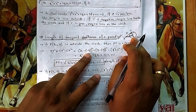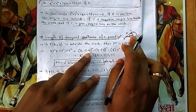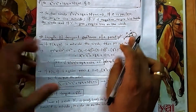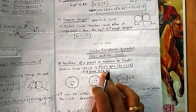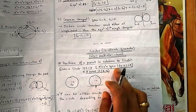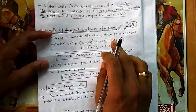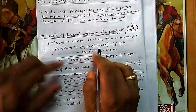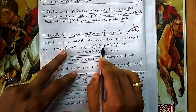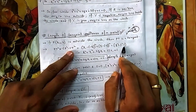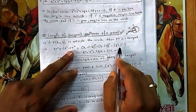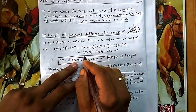From the circle's general equation, the center is (−g, −f) and the radius is √(g² + f² − c). So CP is the distance from the center to point P, and CT is the radius. Substituting these gives you the formula for PT².